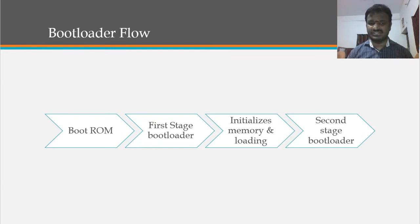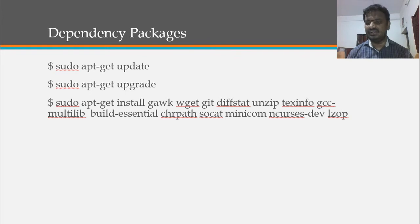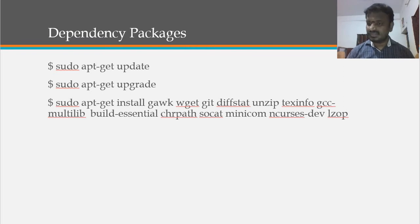To compile and prepare our system, we need to install several dependencies. First do an apt update and upgrade to bring the system to the latest Ubuntu distribution. Then install packages like gawk, wget, git, zip, build-essential, minicom, and lzop for compressing and decompressing the Linux kernel image.